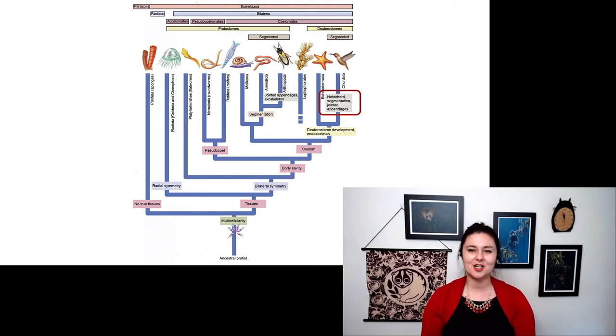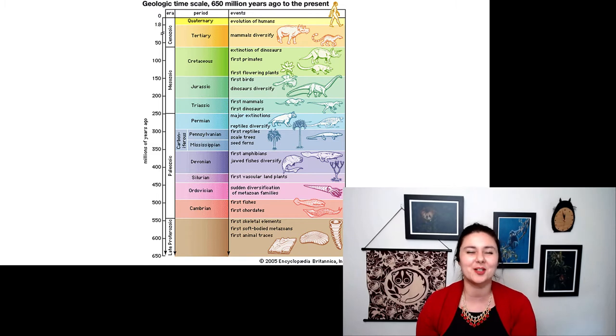So now that we've gotten to chordata, now we're thinking about more and more animals that are more familiar. And we've started to actually get to ancestors that we can see in the fossil record. Up until this point, all of the ancestors we've been talking about are fairly squishy. So it's actually really hard to find fossils of them. Soft-bodied organisms don't fossilize well. So the farther back you go in the fossil record, there's just not as much to say.